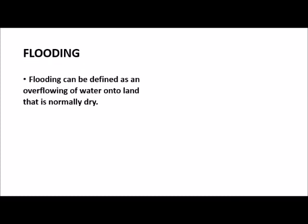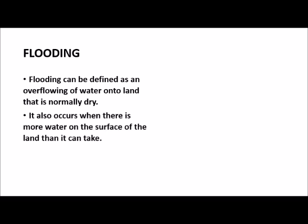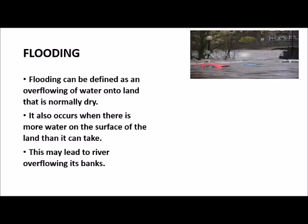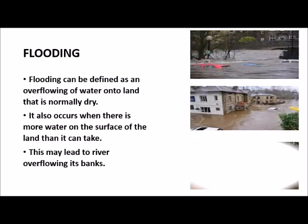Flooding can be defined as an overflow of water onto land that is normally dry. It also occurs when there is more water on the surface of the land than it can take, which may lead to a river overflowing its bank. Displayed on your screen is an example or an image of flooding.